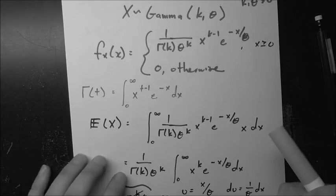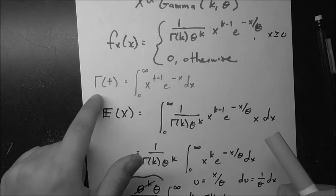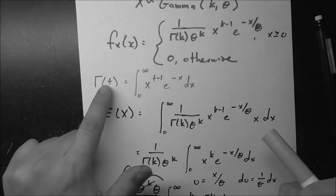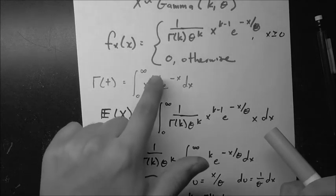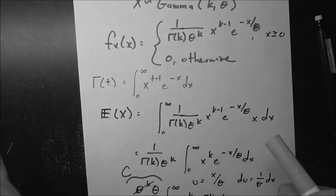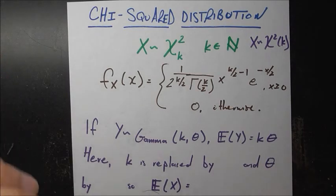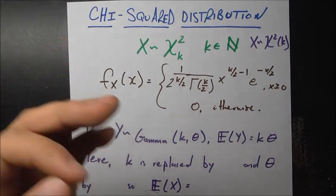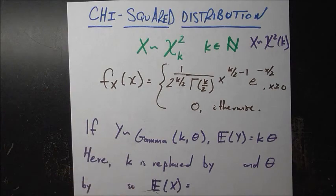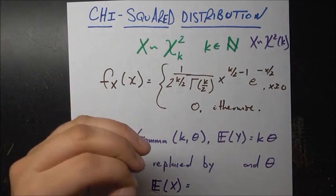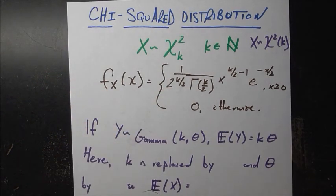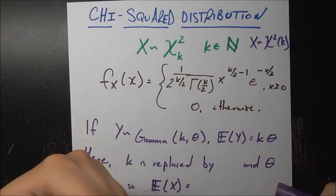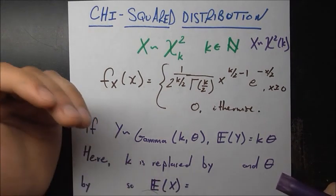If you take that gamma distribution PDF and everywhere you see a k, put k/2 instead, and everywhere you see a theta, put 2, you get exactly the chi-squared PDF. That means the chi-squared distribution is actually just a special case of the gamma distribution, just like the exponential distribution was a special case of the gamma distribution.